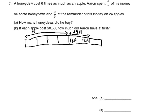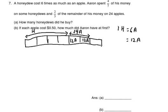One honeydew costs six times as much as an apple, meaning one honeydew equals six apples. If you have 12 apples' worth of money, you can buy two honeydews. So one box equals 12 apples or two honeydews. There are four boxes spent on honeydews, so two times four equals eight honeydews.